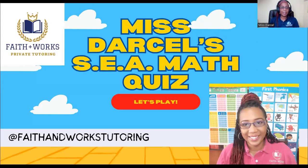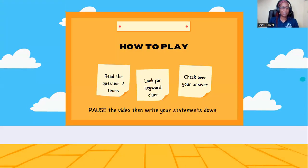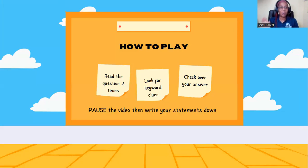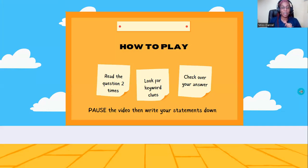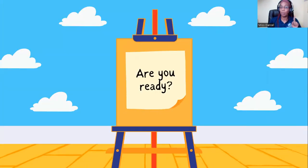All right, so welcome to Ms. Dassel's SEA Math Quiz. Let's play! I think I should add some music. Anyhow, so how do we play? You're going to read the question two times. You're looking for keyword clues, then you're going to answer the question, of course, and always, always check over your answer. Pause the video, then write your statement down. So let's go into the first question. Are you ready to have your pen and pencil and notebooks? Let's go.